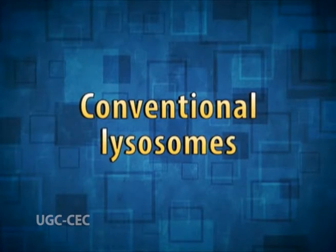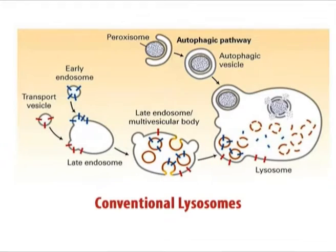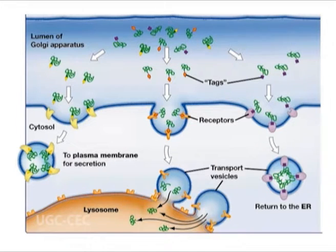Conventional lysosomes reside in the cell as reusable organelles, and when cell division takes place, each daughter cell receives a number of lysosomes. Conventional lysosomes are involved in the dismantling and recycling of various substrates presented to them through endocytosis, phagocytosis, and by autophagosomes. They are responsible for returning many amino acids to the system. It is thought that the reservoir of chemicals in the conventional lysosomes can be topped up by supplies from the Golgi apparatus.